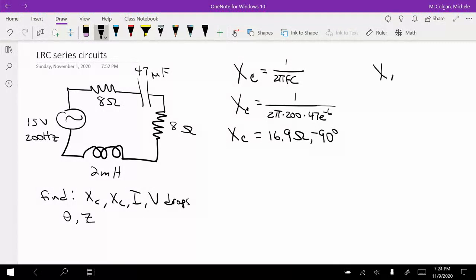Our XL is equal to 2πfL which is 2π times 200 hertz times 2×10⁻³ henries. So XL is equal to 2.5 ohms. And this is in the positive 90 degree direction.